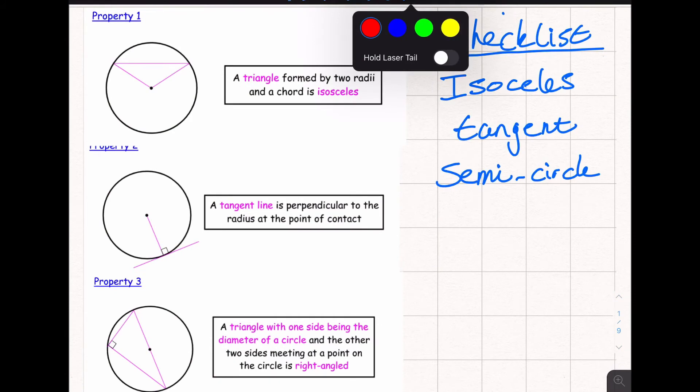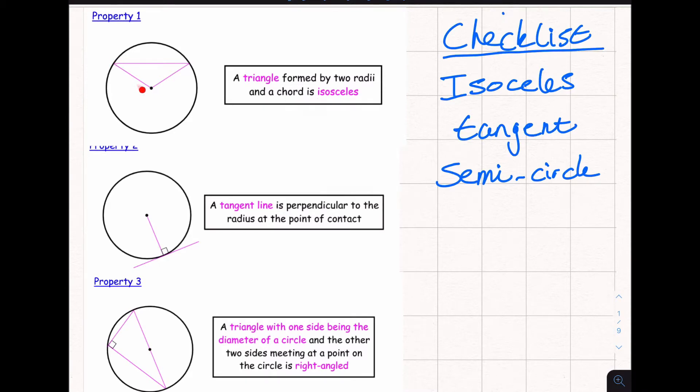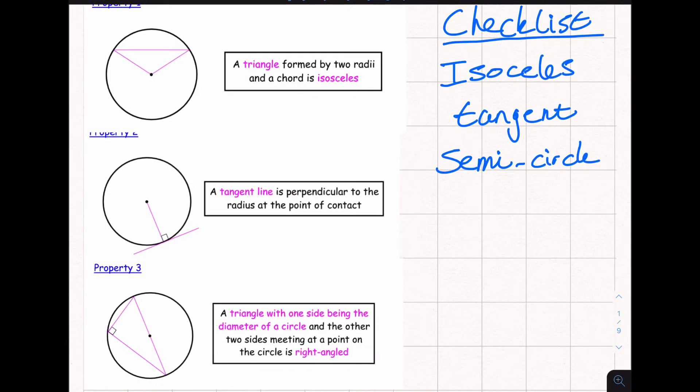Just a reminder of our circle theorems. We have got a triangle formed by two radiuses and a chord is isosceles, so we've got two radiuses here or radii and we make a triangle with a chord we get an isosceles triangle. A tangent is perpendicular to the radius at the point of contact, a radius makes a tangent at right angles and the last one if we've got a diameter making a semicircle and we end up making a triangle then we end up with a right angle triangle getting formed.